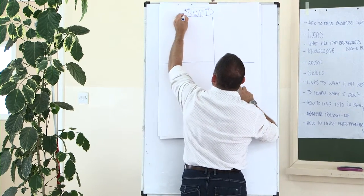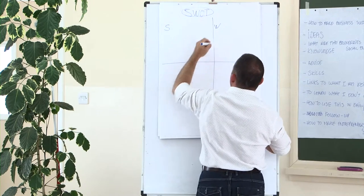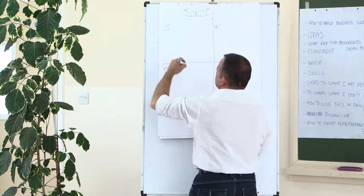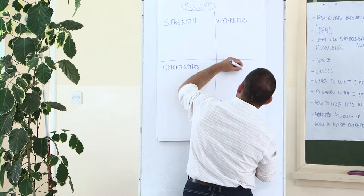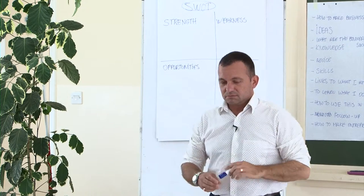S is for Strength. W is for Weakness. O is for Opportunities. T stands for Threats. So, what can we do with this? You could analyze your business plan, your idea, using these four words.